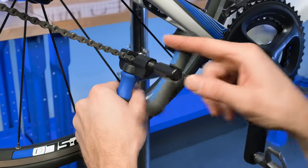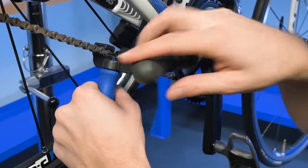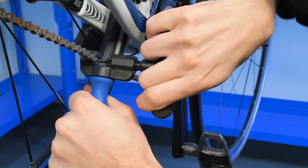The CT 4.3 Master Chain Tool with Peening Anvil is a powerful, precise tool designed to quickly and accurately remove and install chain rivets.